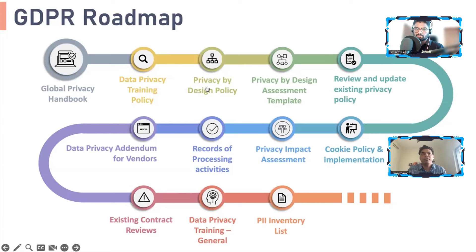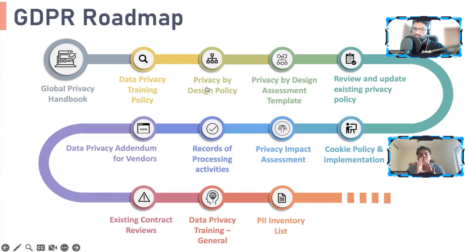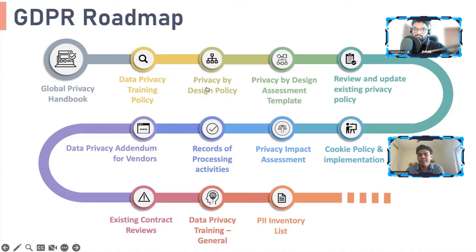The PII inventory list helps you categorize what is personal data versus sensitive personal data. This distinction is important in regulation — sensitive data requires extra technical and organizational measures, which are essentially ISMS standards: good encryption, data masking, access control, and privileged access management.